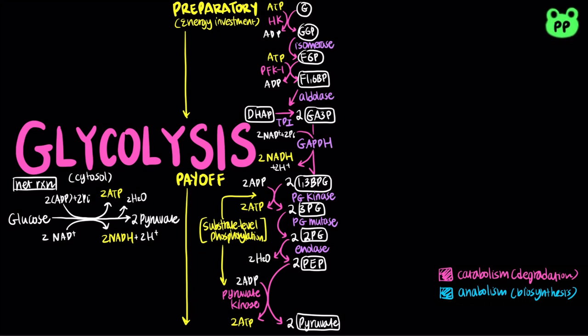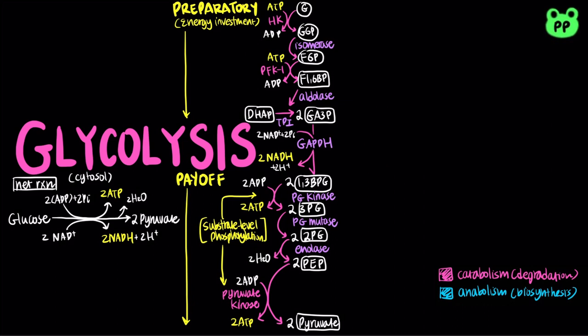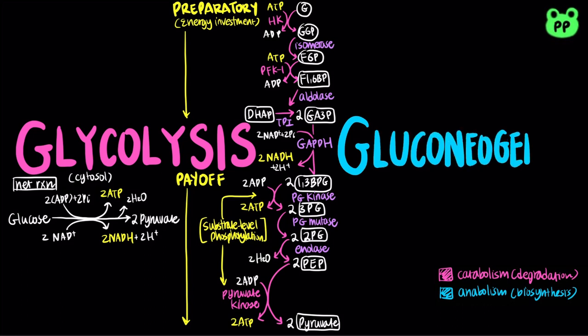Glycolysis takes place in all cells of our body to break down glucose for metabolic energy. Some organs, such as our brain, prefer to use glucose as the energy source. However, the supply of glucose is not always readily available, especially between meals and after exercise. Therefore, another pathway known as gluconeogenesis — glucose meaning sugar, neo meaning new, and genesis meaning formation — synthesizes glucose from non-carbohydrate precursors such as lactate, glucogenic amino acids, and triacylglycerols. It takes place primarily in the liver.